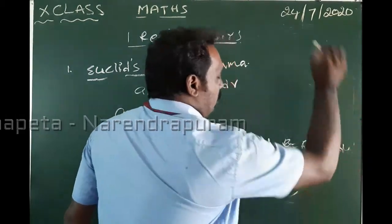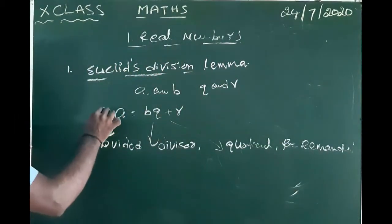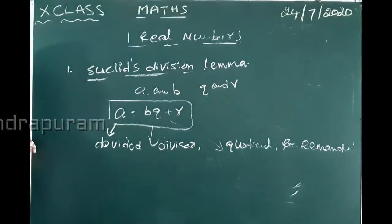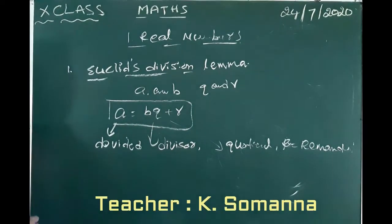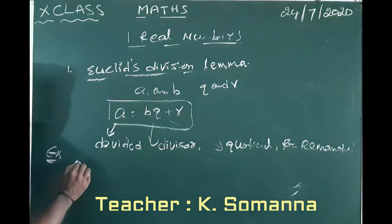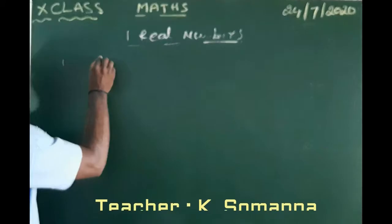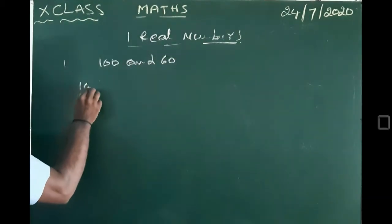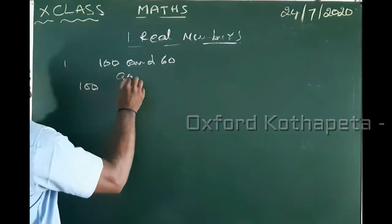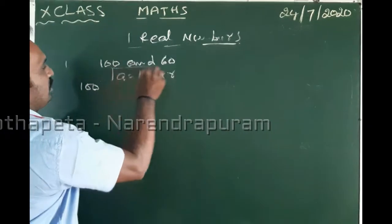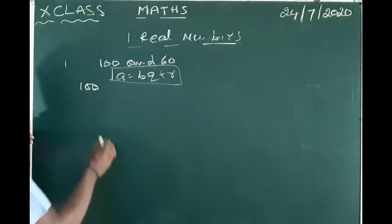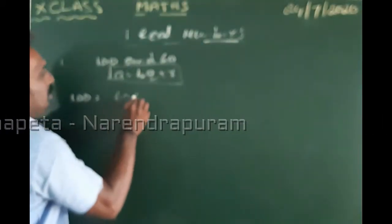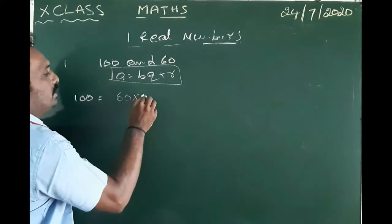R is the remainder. The unique division lemma formula is: A = BQ + R.